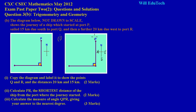The ship started at port P — that's our starting point. It sailed 15 kilometers due south to port Q. So from P, going straight down (south), we arrive at port Q. I'll label that point Q and mark the distance as 15 kilometers.